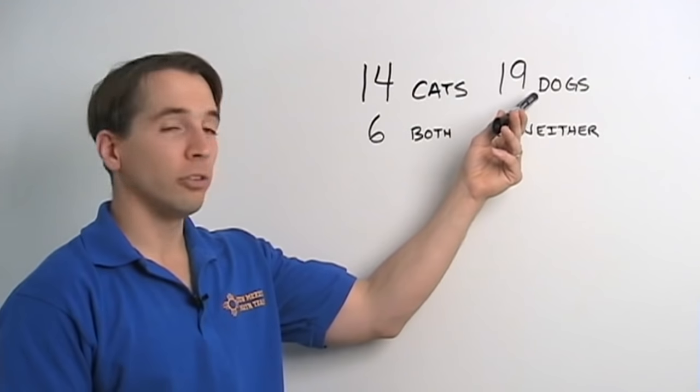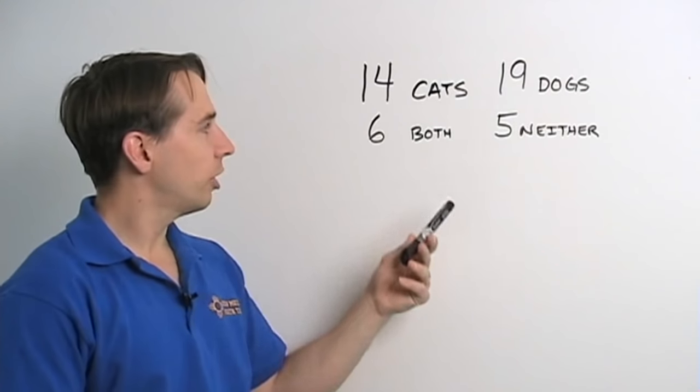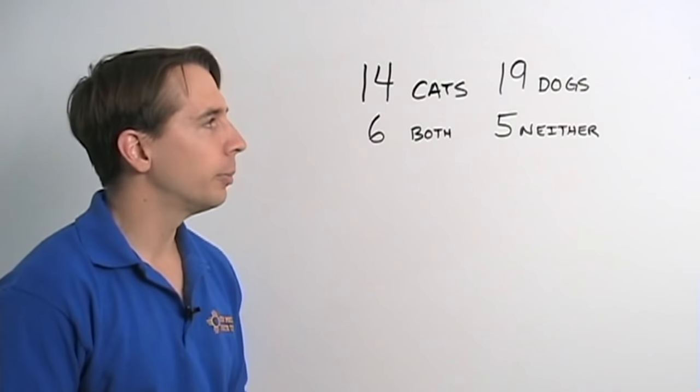He told me 14 houses have cats, 19 have dogs, 6 have both, and 5 have neither cats nor dogs, and they don't have any other pets.